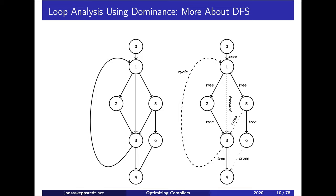Now let's look at loop analysis. Assuming the dominance relation has already been computed, we can do a depth-first search of the control flow graph to detect loops. To do this we should recall the four different kinds of edges in a directed graph during a depth-first search. A tree edge is when we visit a vertex for the first time.